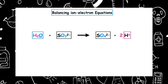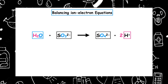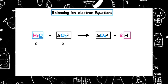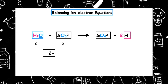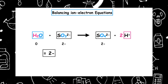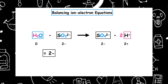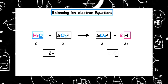The next thing is to look at the overall charge, starting from the left. Water has an overall charge of zero. The SO3²⁻ has an overall charge of two minus, so zero plus two minus gives us a total charge on the left-hand side of two minus. The SO4²⁻ has a charge of two minus, and the two hydrogen ions give a charge of two plus, so two minus plus two plus gives an overall charge of zero.